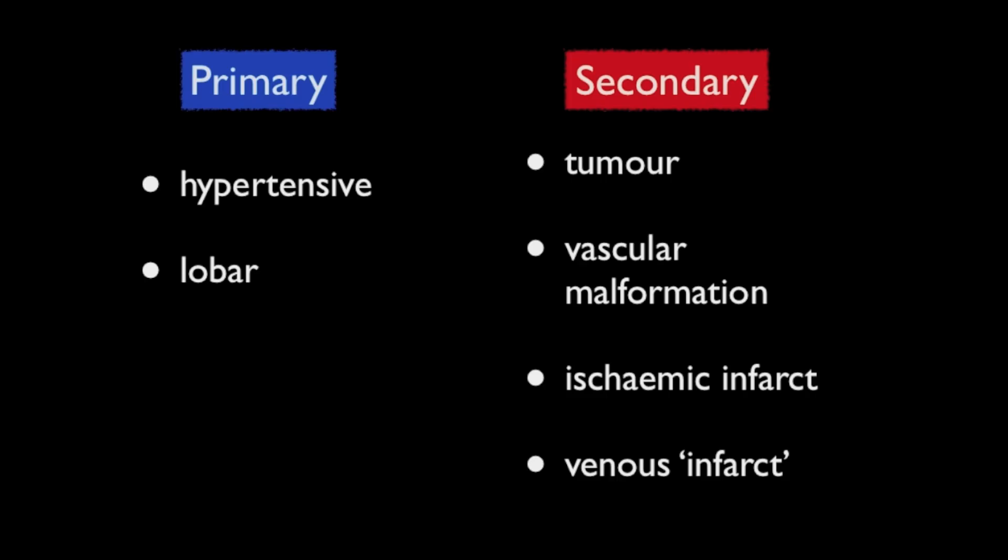Secondary hemorrhages typically are those that arise from an underlying tumour, a vascular malformation, or hemorrhagic transformation of a previous ischemic infarct or of a venous infarct. In reality, both hypertensive and lobar hemorrhages do have underlying pathology, making the distinction between primary and secondary hemorrhages somewhat academic.